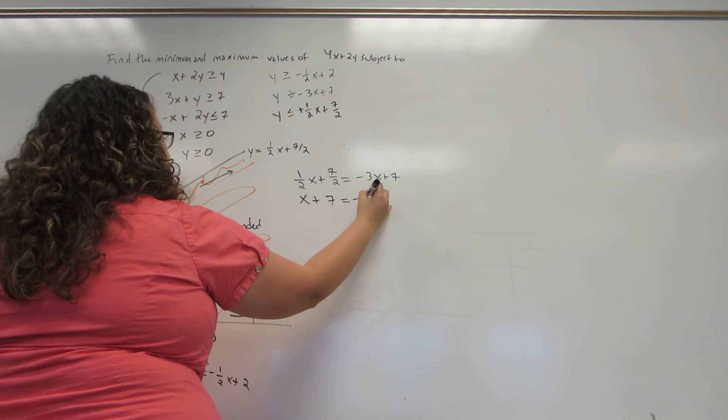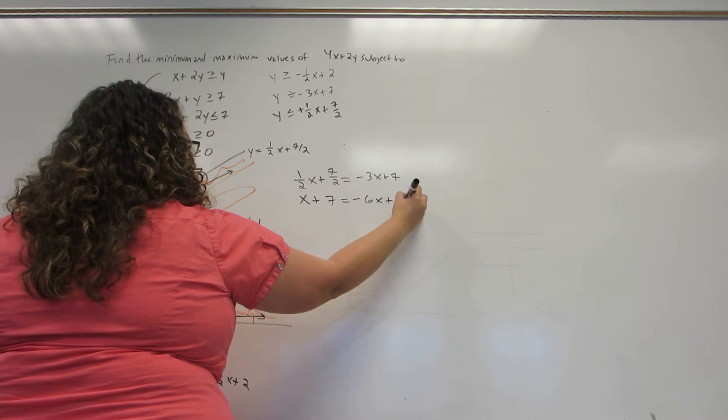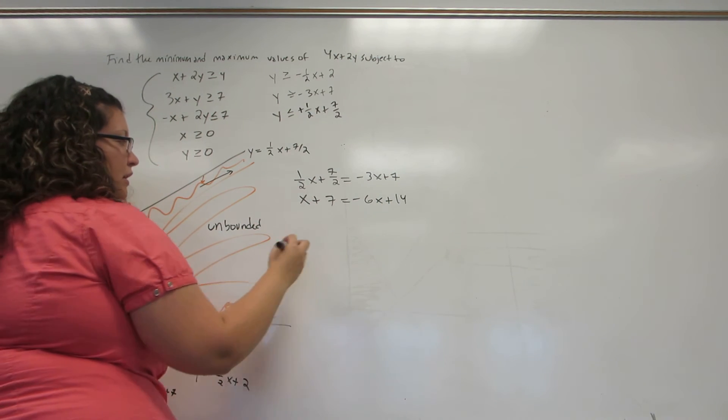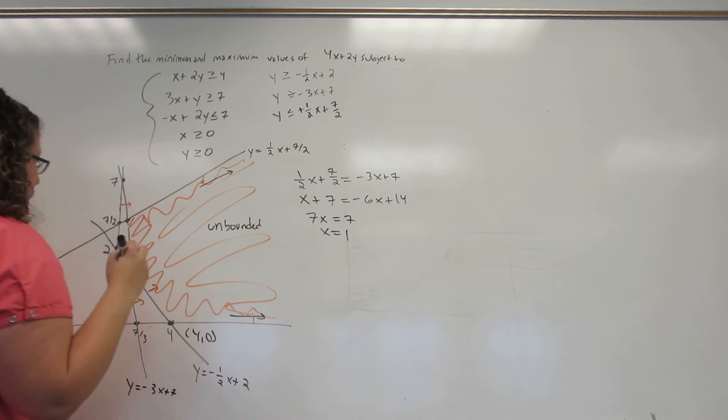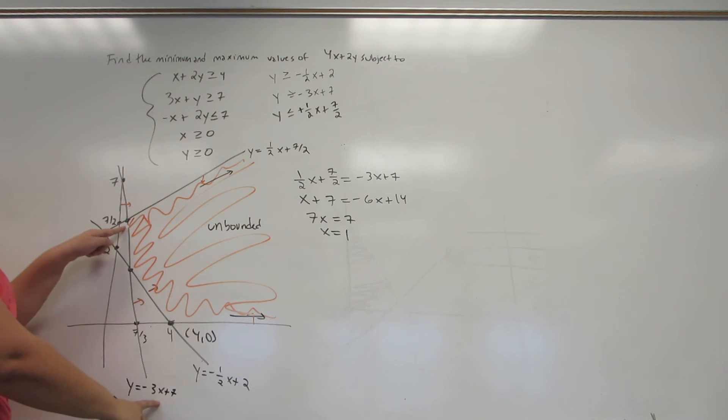Once again, I'm going to multiply through by 2 so that I get rid of fractions immediately. And I find that X must be 1. Plugging it back into the easier of the two equations, I get that Y must therefore be 4.